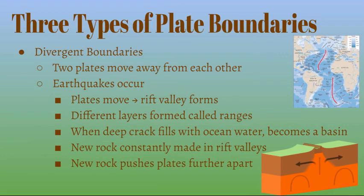Divergent boundaries: two plates move away from each other and earthquakes occur. As plates move apart, they create a gap with different layers forming called ranges. When the deep crack fills with ocean water, it becomes a basin. New rock is constantly being made in rift valleys, pushing the plates further apart. A great example is the mid-ocean ridge.